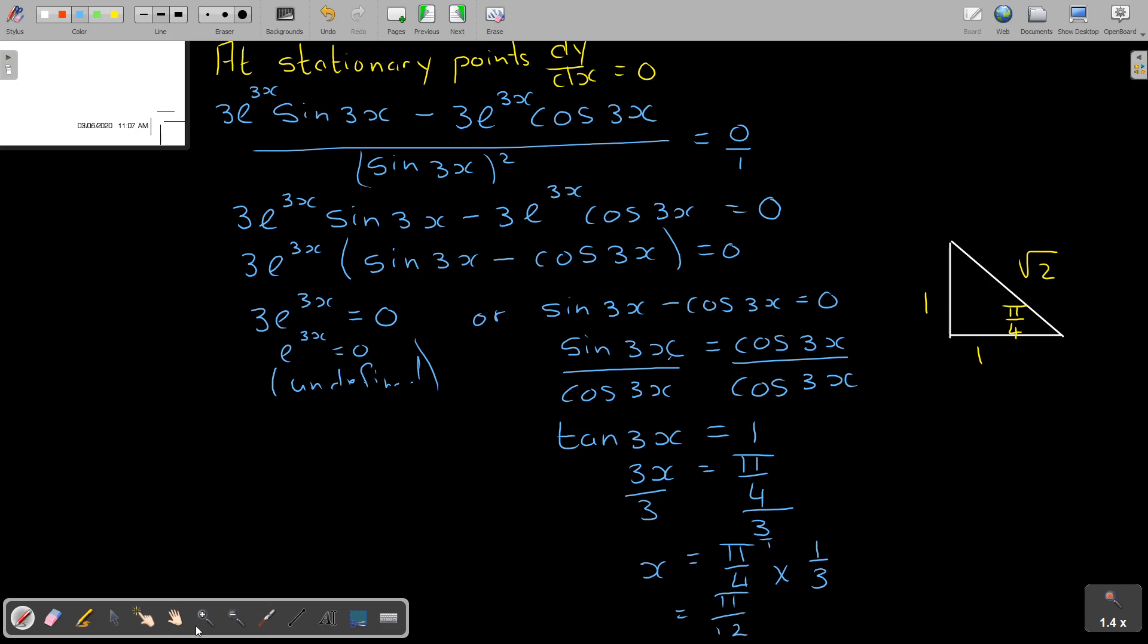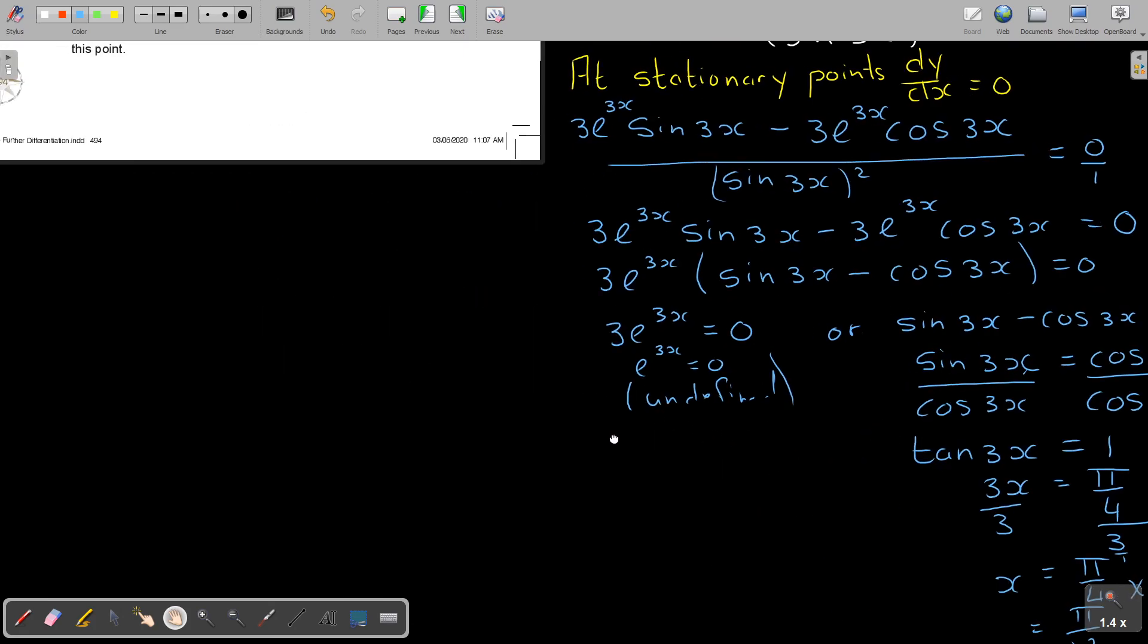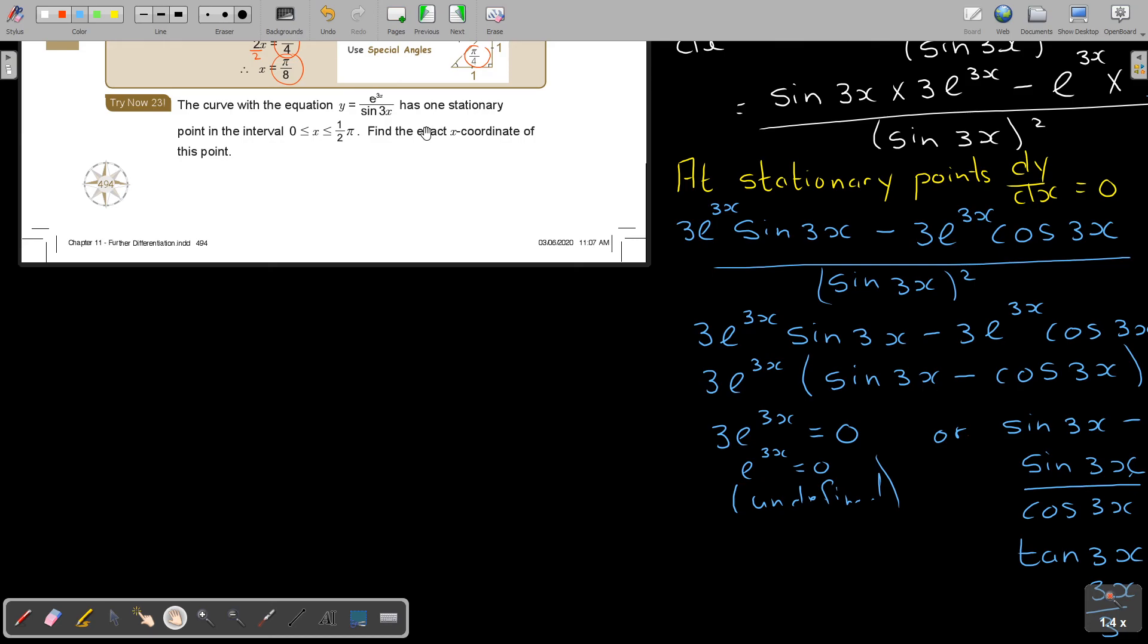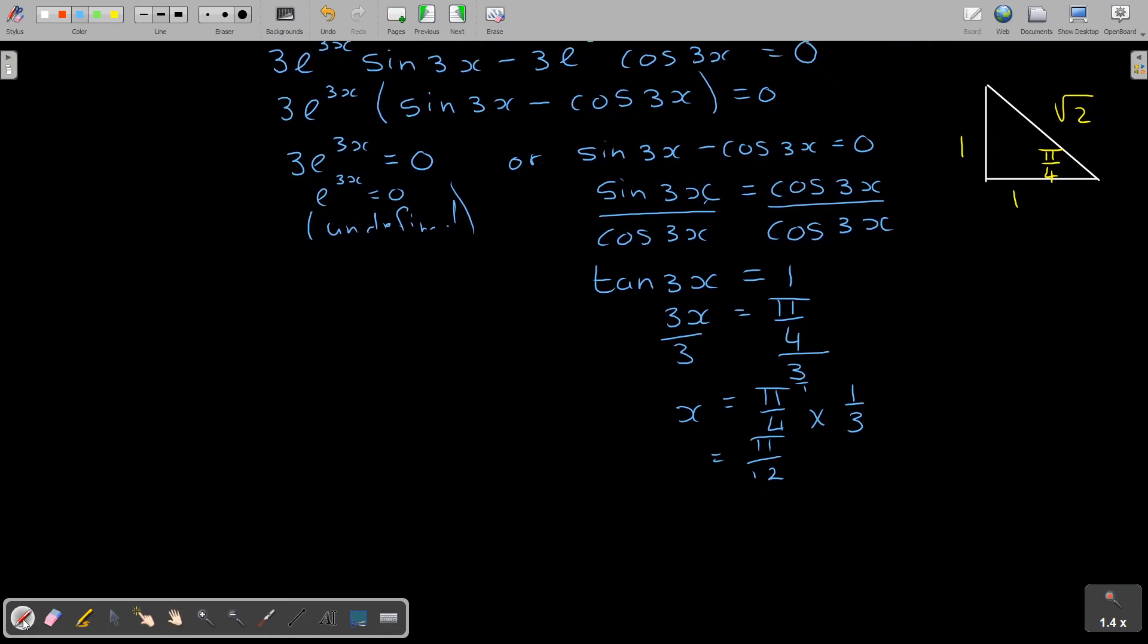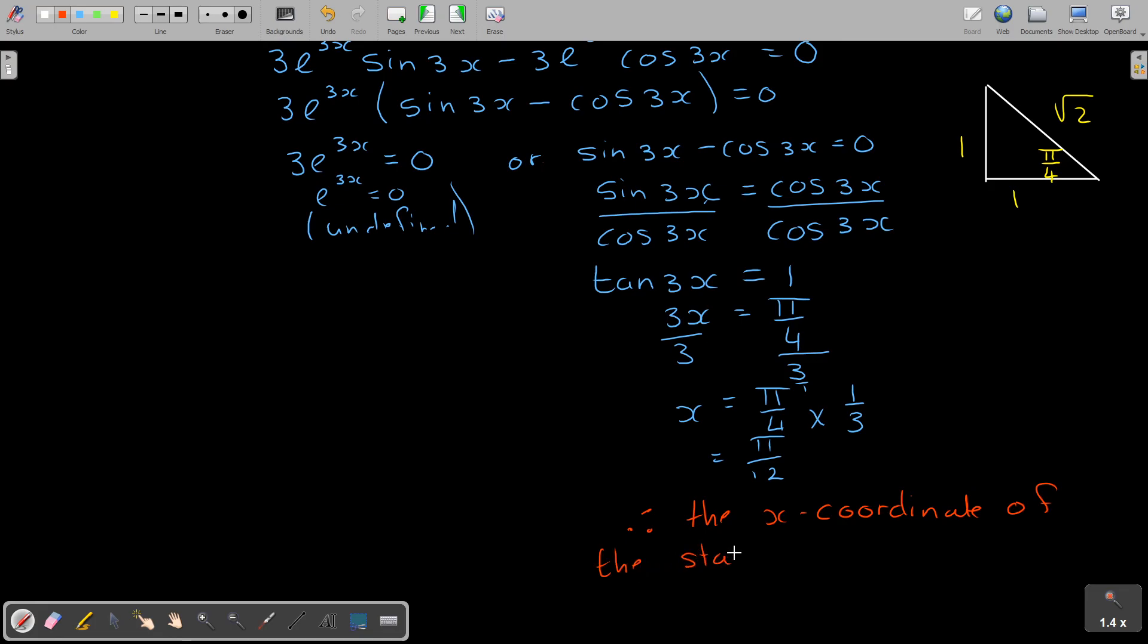And what is the question? Let's go back to the question. Find the exact, exact, that should have told you special angles, X coordinate of this point. So don't work it out as a decimal. So therefore, I like to emphasize, therefore, the X coordinate of the stationary point is pi over 12. And if you should have worked out the Y, not in this question, you would have substituted this into the original function or equation.